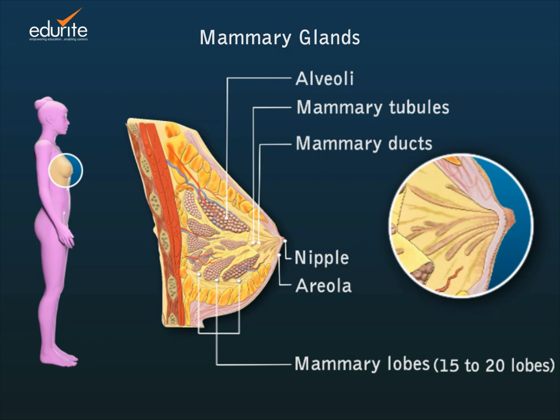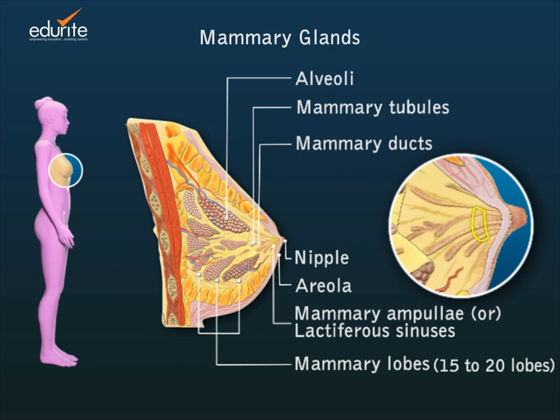The mammary ducts enlarge near the nipple to store milk. These enlarged mammary ducts are called mammary ampullae or lactiferous sinuses. The mammary ampullae supply milk to the numerous lactiferous ducts present in the nipple.